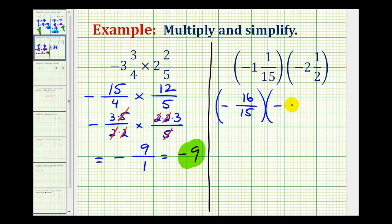Times another negative fraction with a denominator of two, and the numerator would be two times two plus one, which is five.